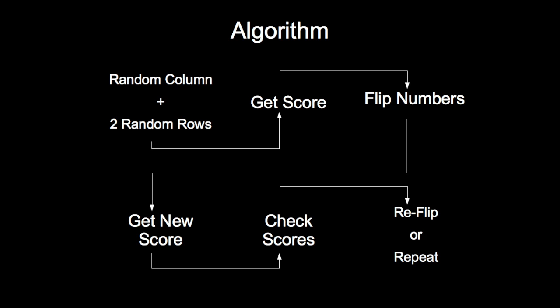The first thing that happens is that the program selects a random column, and within that column selects two random numbers. It then makes sure that with those two numbers in those specific positions, it knows the overall score of the puzzle. The score of the puzzle is the sum of the score of each number, where the score of each number is dictated by the quantity of that same number in the same row and box as that number.